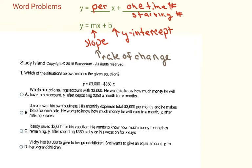Looking at letter A: Waldo started a savings account with $3000 and wants to know how much he will have after depositing $350 a month for x months. The 3000 is the starting amount and 350 is per month — those fit — however, depositing means adding money, whereas our equation uses subtraction. So it's not going to be A.